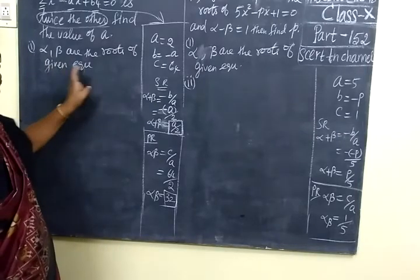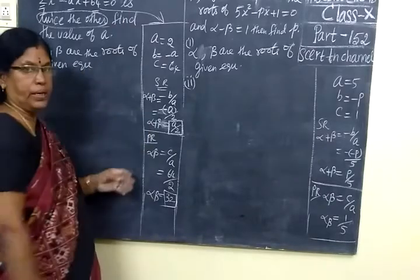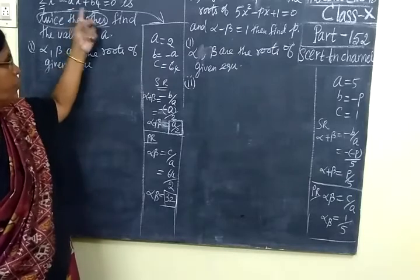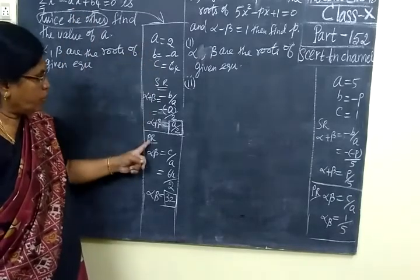Alpha and beta are the roots of the given equation. It is the usual procedure. In the equation we have the a value, b value, c value, sum of the root, product of the root.